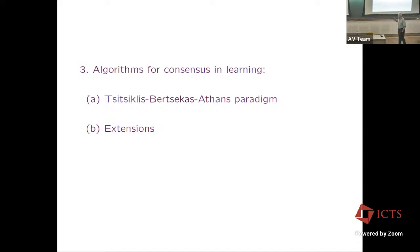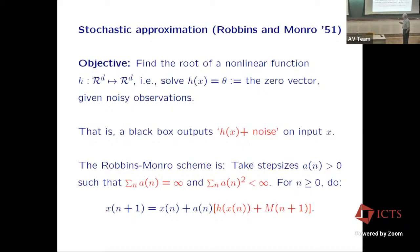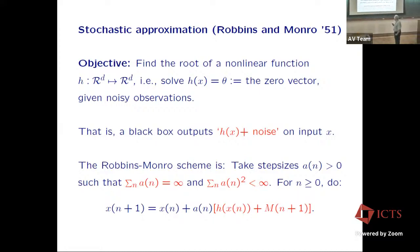Let me quickly run through stochastic approximation — the Robbins-Monro algorithm. The original motivation came from statistics: they wanted to find a zero of some nonlinear function h, given noisy measurements.